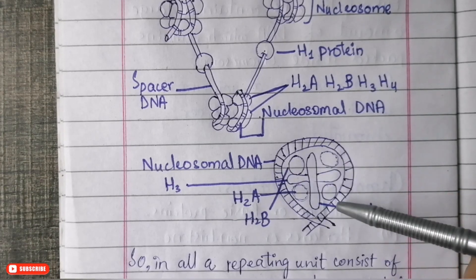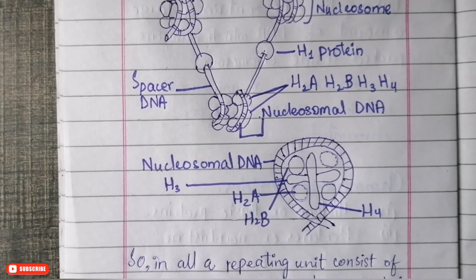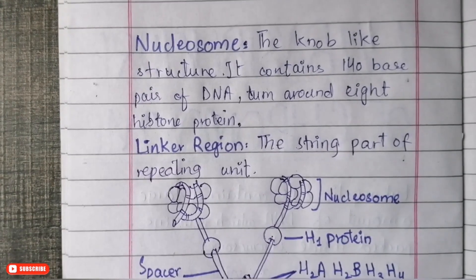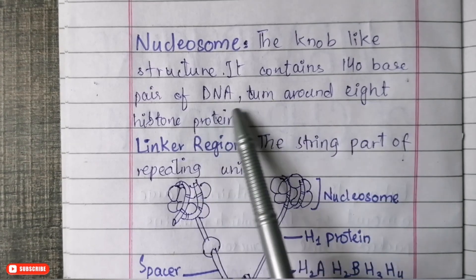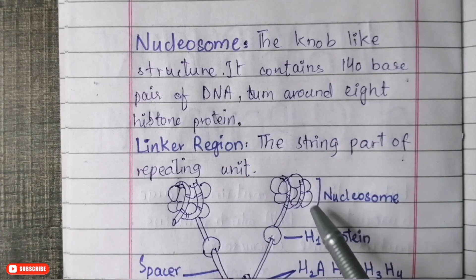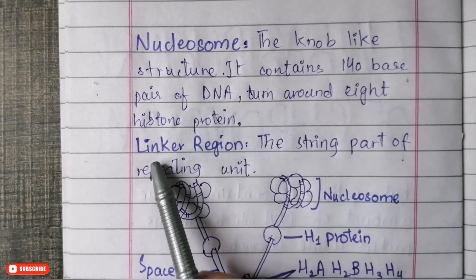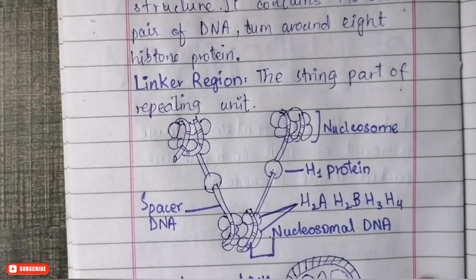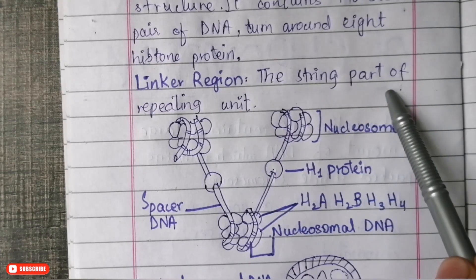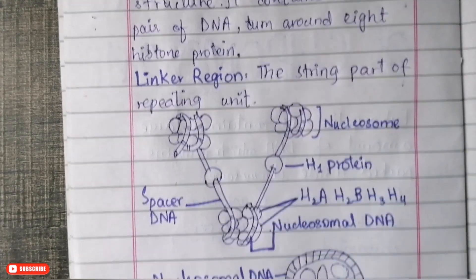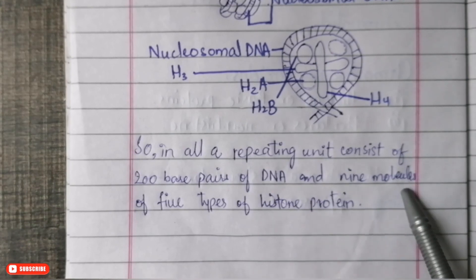Looking closely at the structure of these nucleosomes, the nucleosome is basically a knob-like structure. It contains 140 base pairs of DNA. The nucleosome is composed of DNA that encloses eight histone proteins. The linker region, also known as spacer DNA, is the string part of the repeating units. In total, a repeating unit consists of 200 base pairs of DNA and nine molecules of five types of histone protein.